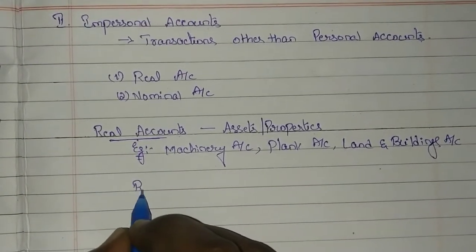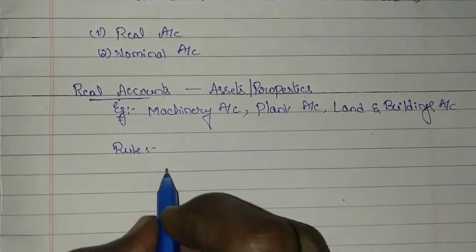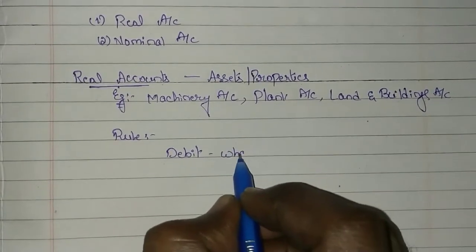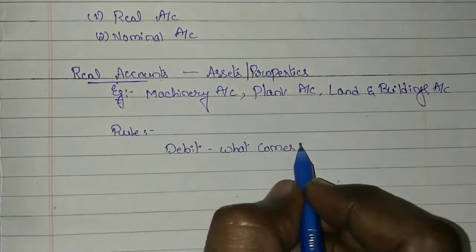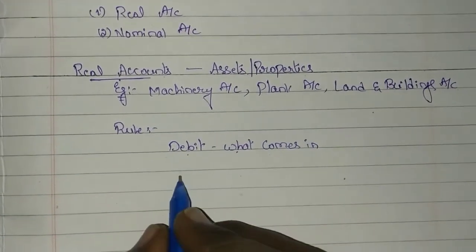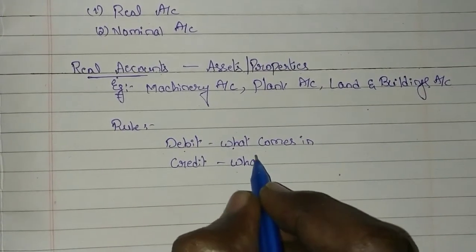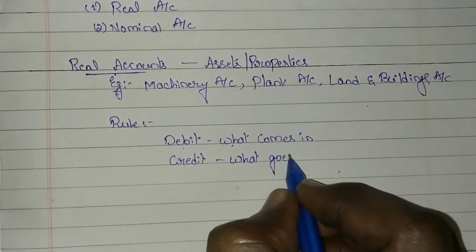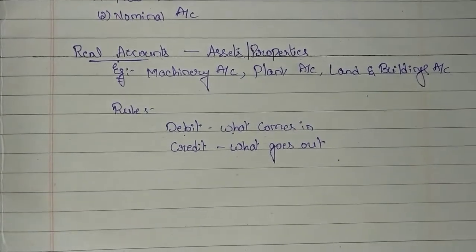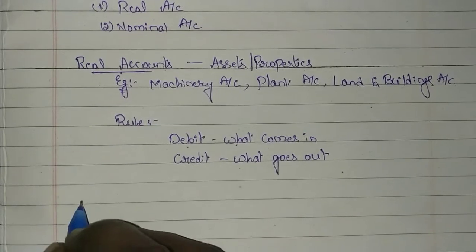The rule for real accounts is: debit what comes in, and credit what goes out. When you are making the transaction of assets, what is coming into the business organization is shown under the debit side, and what is going out in exchange for the asset should be recorded under the credit side.